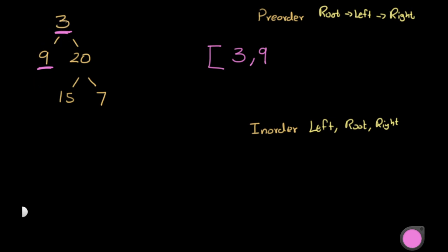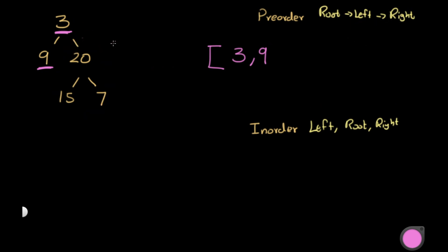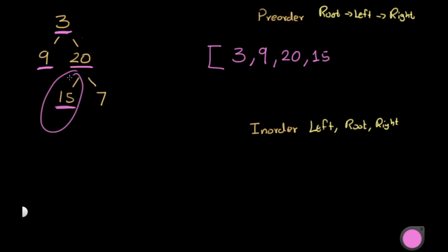We've handled the root and the left, so now we go to the right of 3, which is 20. At 20, we first account for the root: 20. Then we go left to 15, account for 15, and its left and right are empty. Done with left of 20. Then we go right to 7, account for 7, and both its left and right are empty. So our complete pre-order traversal is: 3, 9, 20, 15, 7.